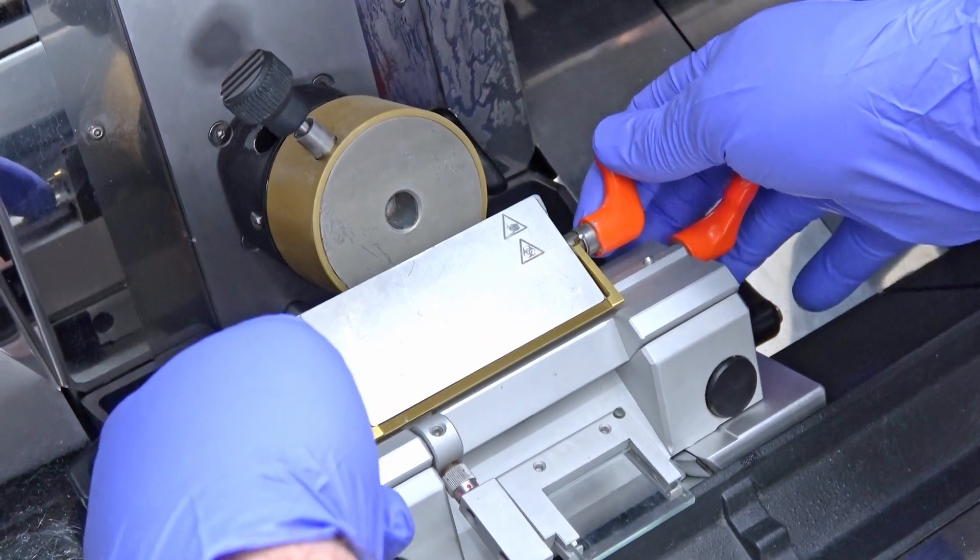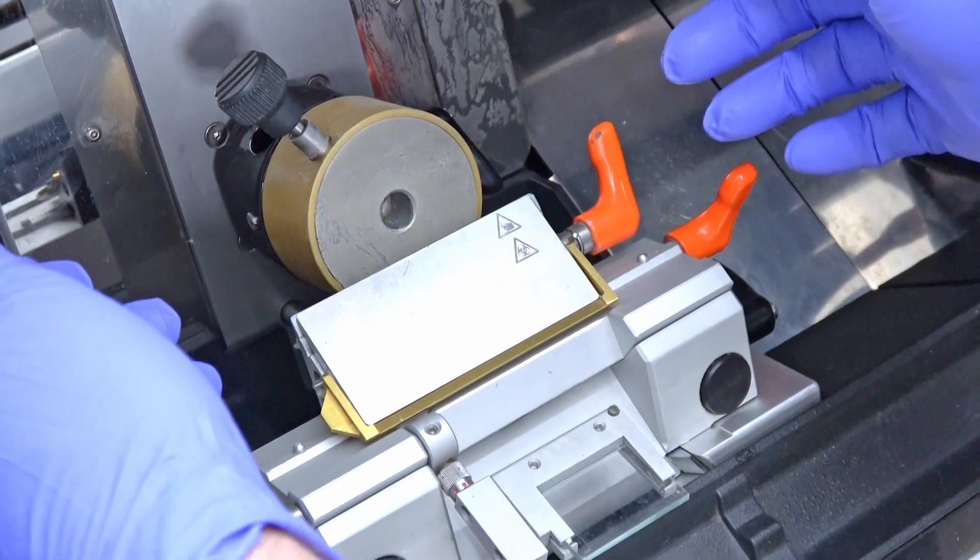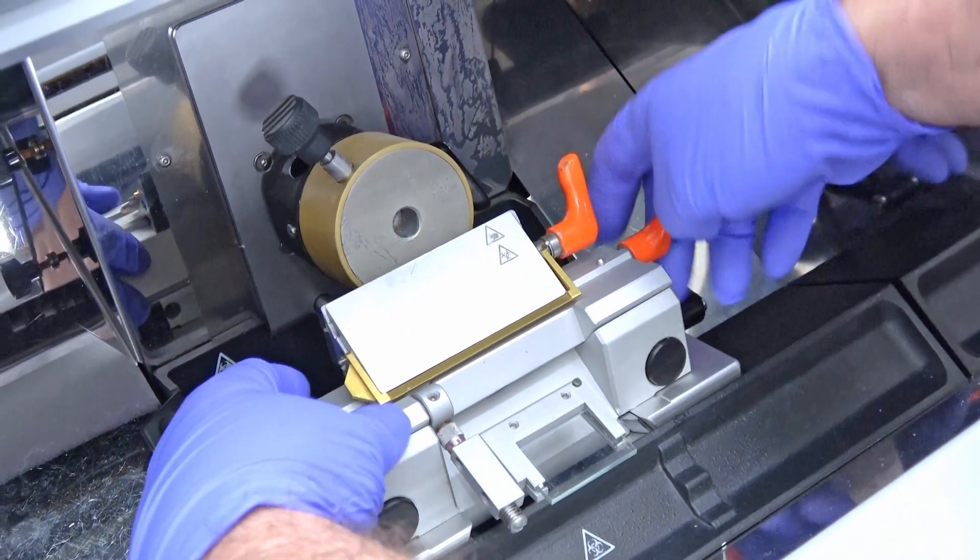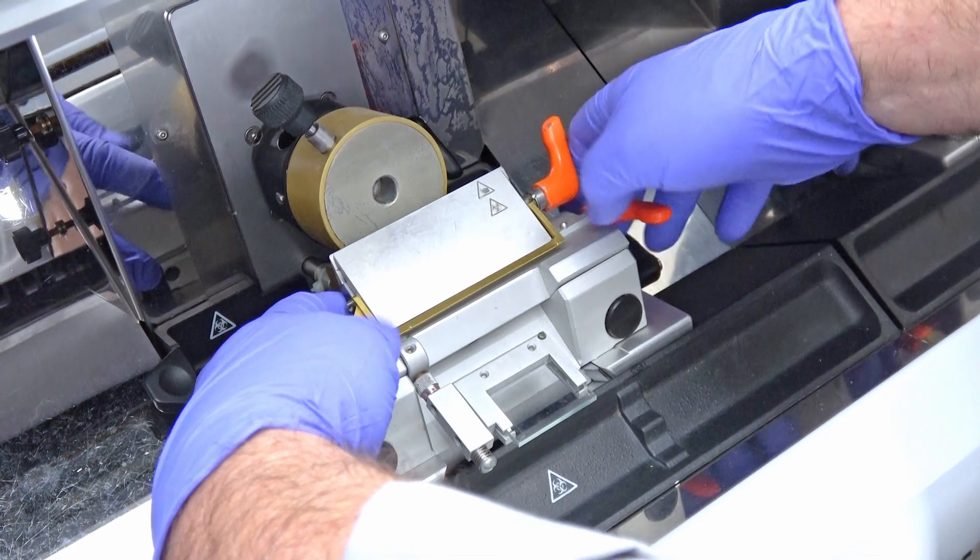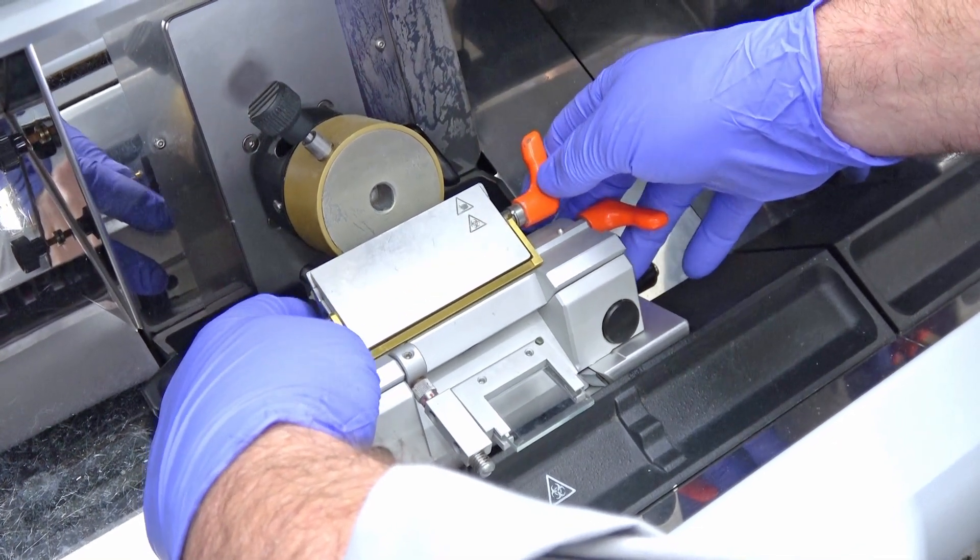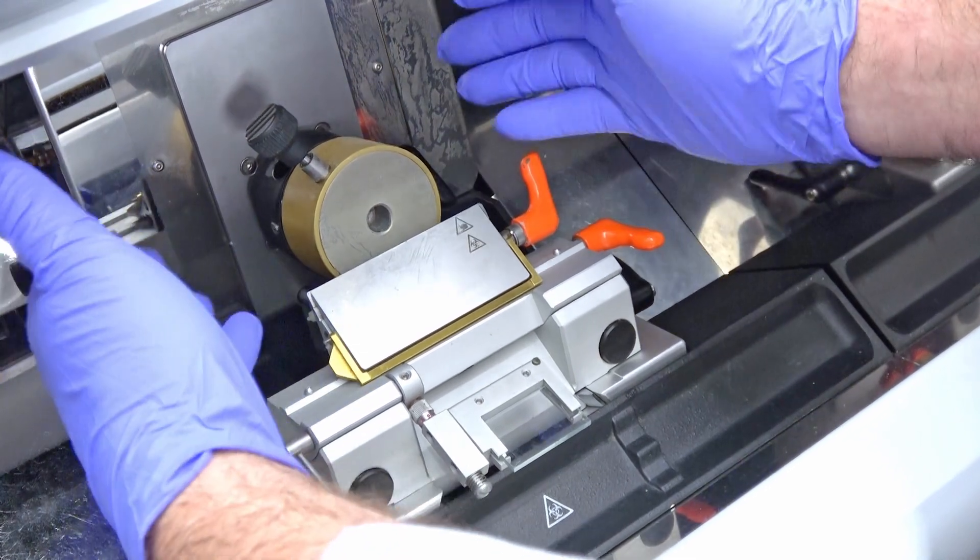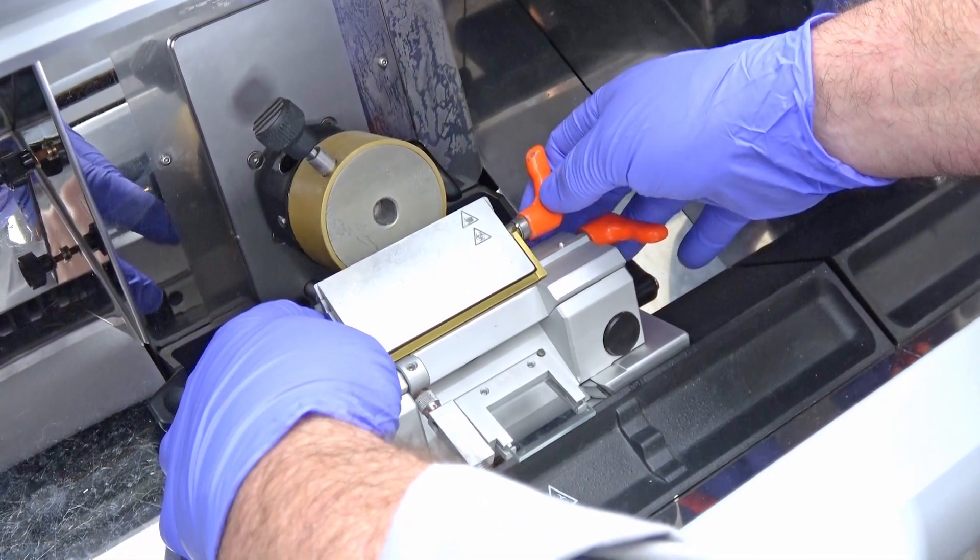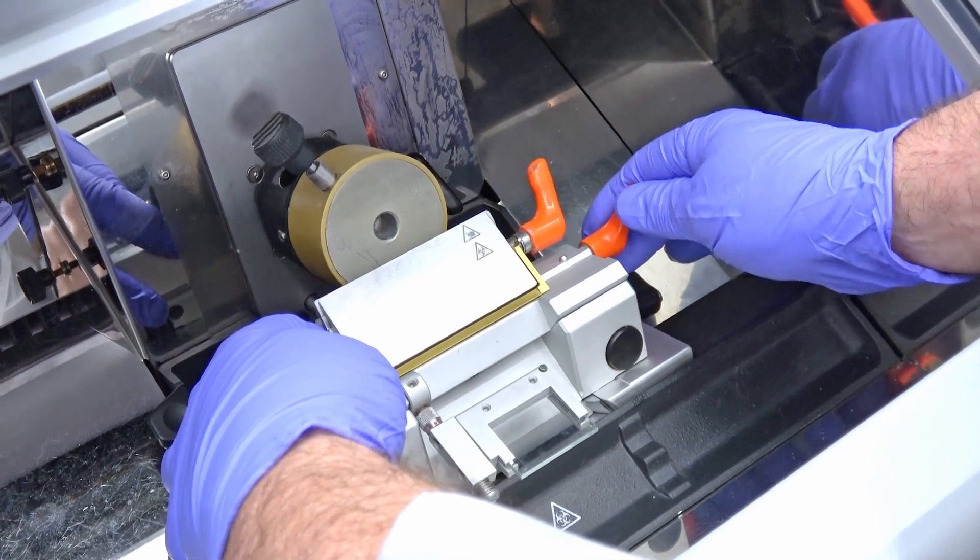This clamps the blade here. By loosening the other knob you can slide the whole blade back and forth, which is usually not necessary because this one's got the wide knife, so centering it with the cutting head usually does it.